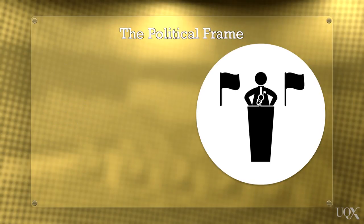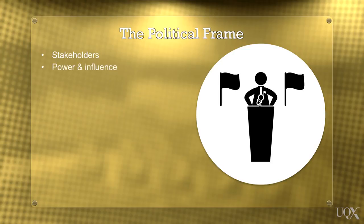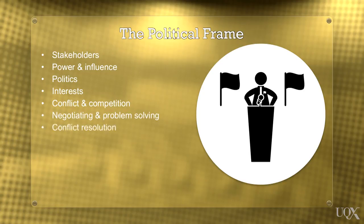In the political frame, the leader considers the issue or problem from the point of view of organisational politics and advocacy by looking at stakeholders, power and influence, politics, interests, conflict and competition. This is done through understanding the processes of negotiation and problem solving, conflict resolution, building coalitions and maintaining or redistributing power.